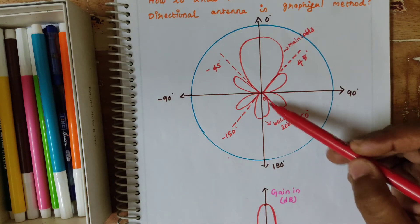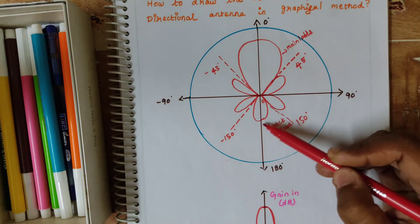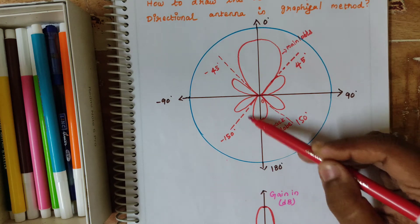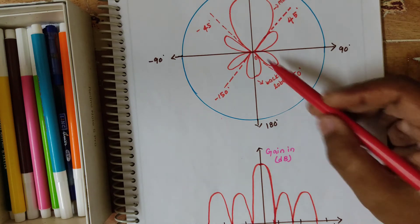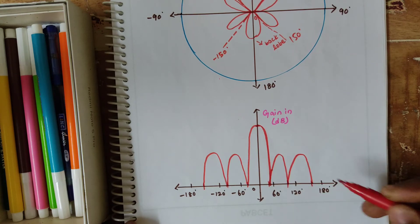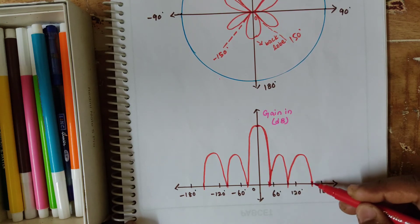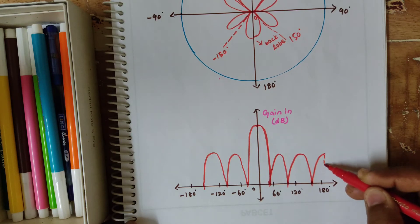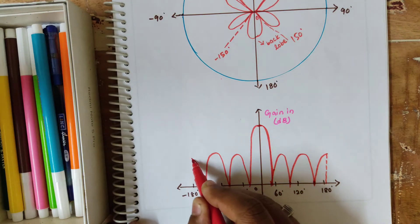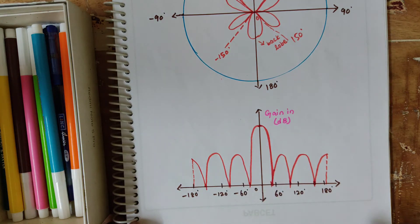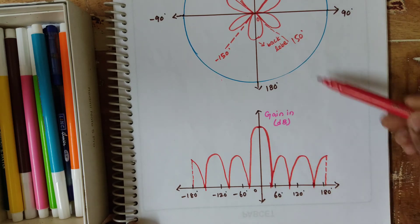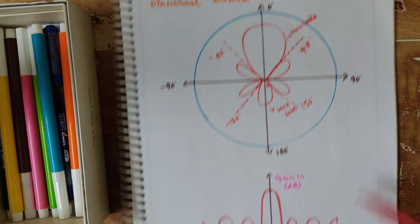Finally we are plotting our back lobe. The back lobe is having plus 180 degrees and minus 180 degrees. The back lobe is starting near to 150 degrees, so I am taking the back lobe at 150 degrees and drawing like this. Now we have finished the diagram of graphical representation. The polar form is now converted into graphical method.